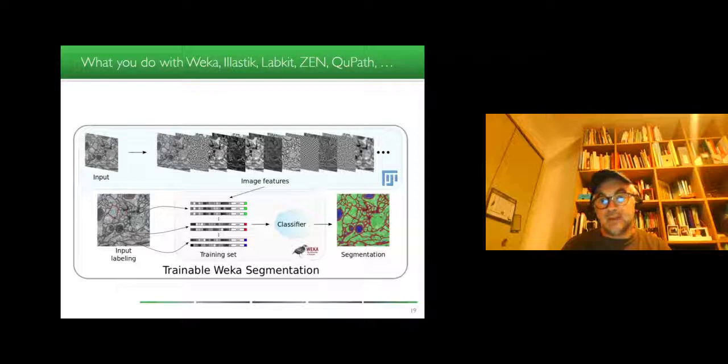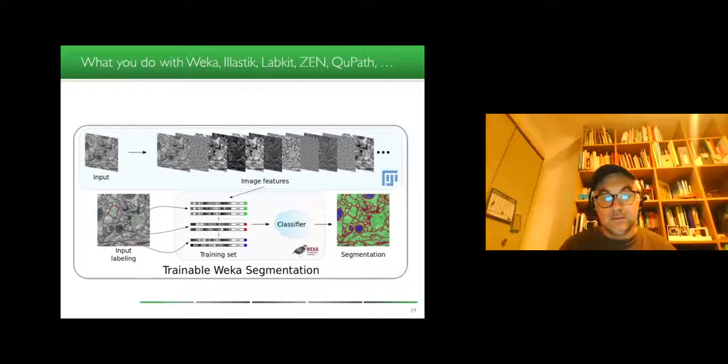This is classical machine learning, where the expert fixes the filters and the machine works in a multidimensional space to produce classification or regression. This is exactly what you do in very standard tools such as Weka, Elastic, LabKit, Zen, QPath, which are applying what is called random forest to take decision on object classification or pixel classification for segmentation.